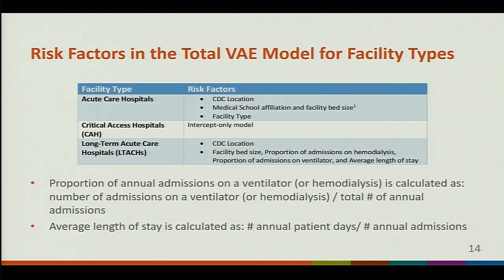Here are the risk factors in the total VAE models for all facility types. For acute care facilities, the following risk factors were found to be significant: CDC location, medical school affiliation, facility bed size, and facility type. Medical school affiliation and facility bed size are derived from the annual survey. For critical access hospitals, the VAE model is intercept only, meaning there were no significant risk factors identified during the statistical analysis.